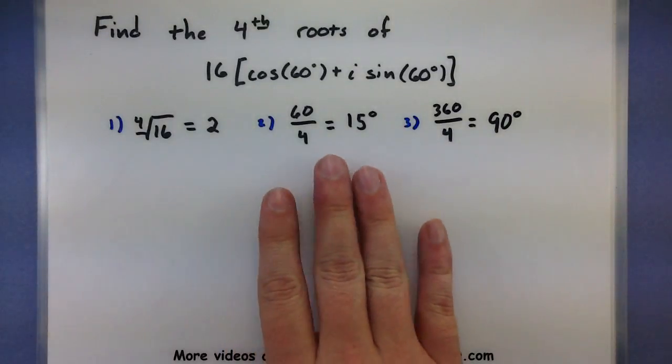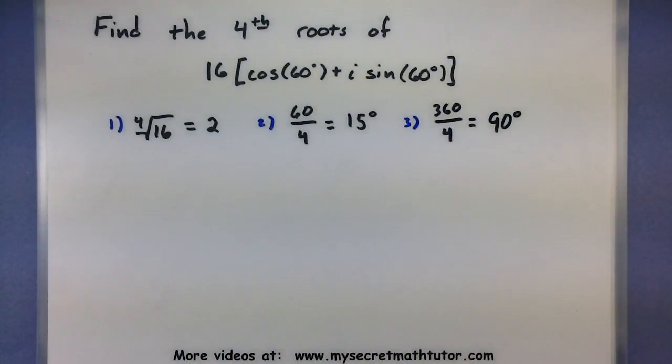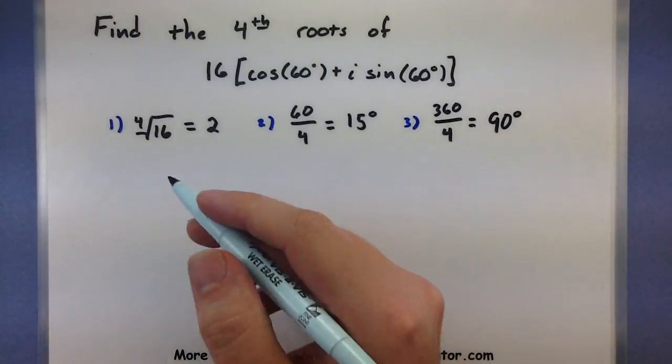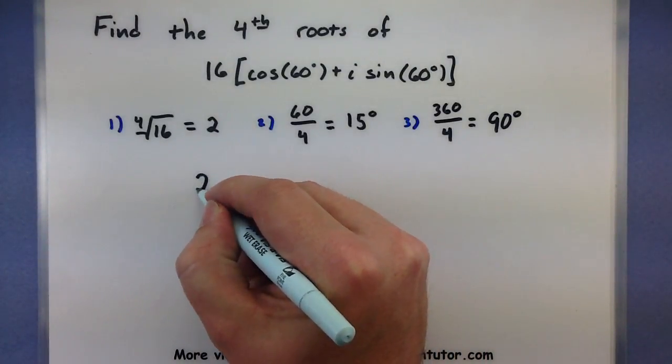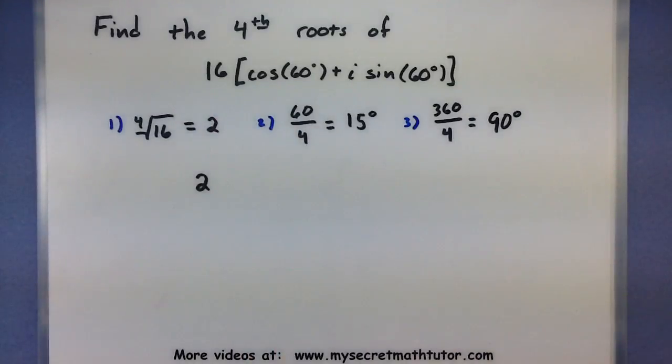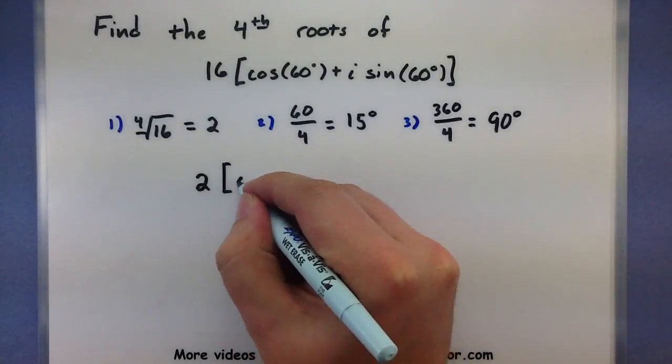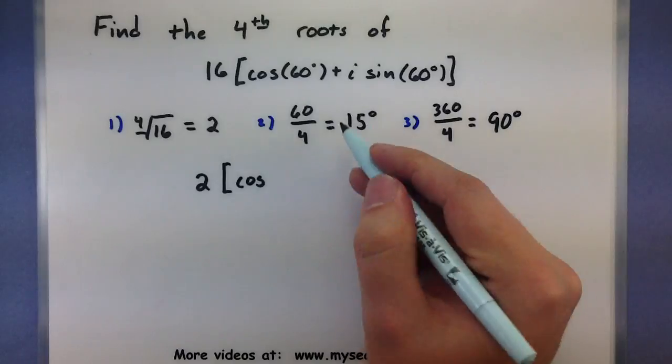Now that you have each bit of information, watch how we put these together to build all of our roots. So what is the first of our roots? We'll have 4 of them in total. Well, the first one, we'll use the fourth root of the modulus, cosine of this angle, 15 degrees,